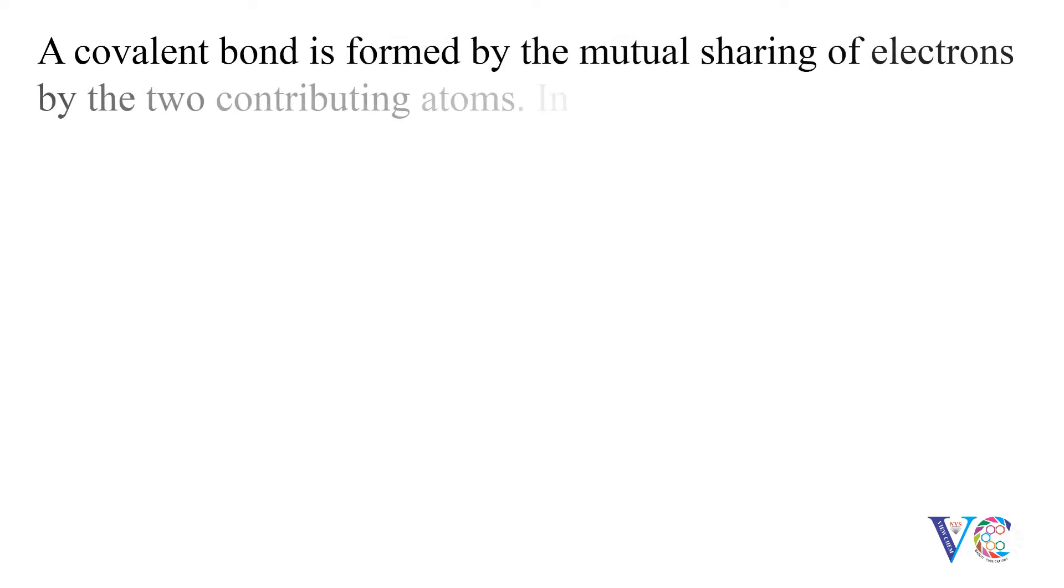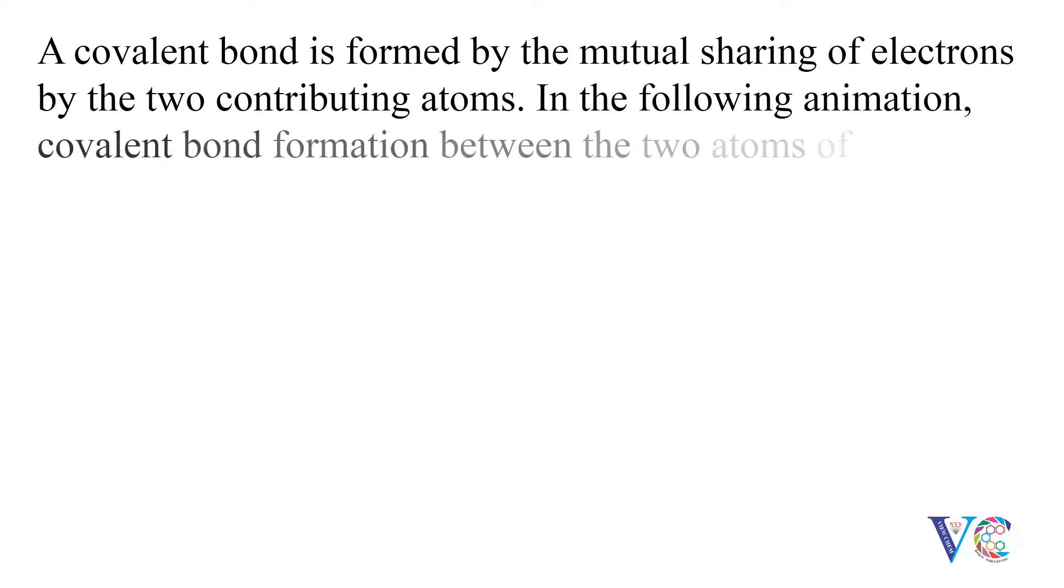A covalent bond is formed by the mutual sharing of electrons by the two contributing atoms. In the following animation, covalent bond formation between the two atoms of an element A is shown.